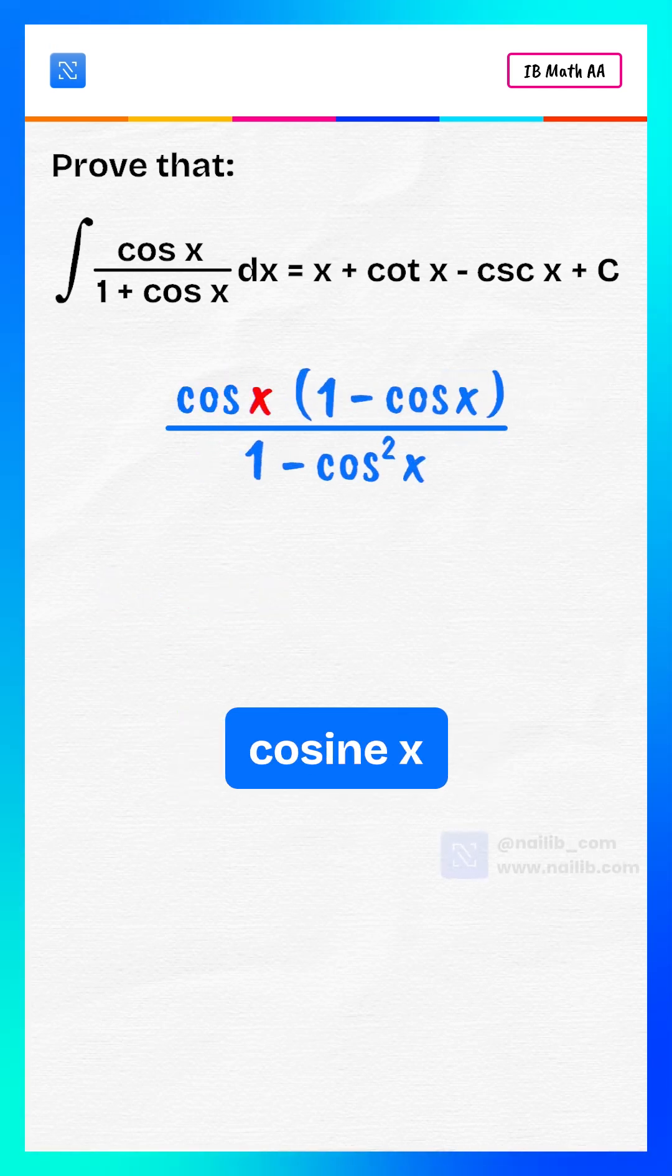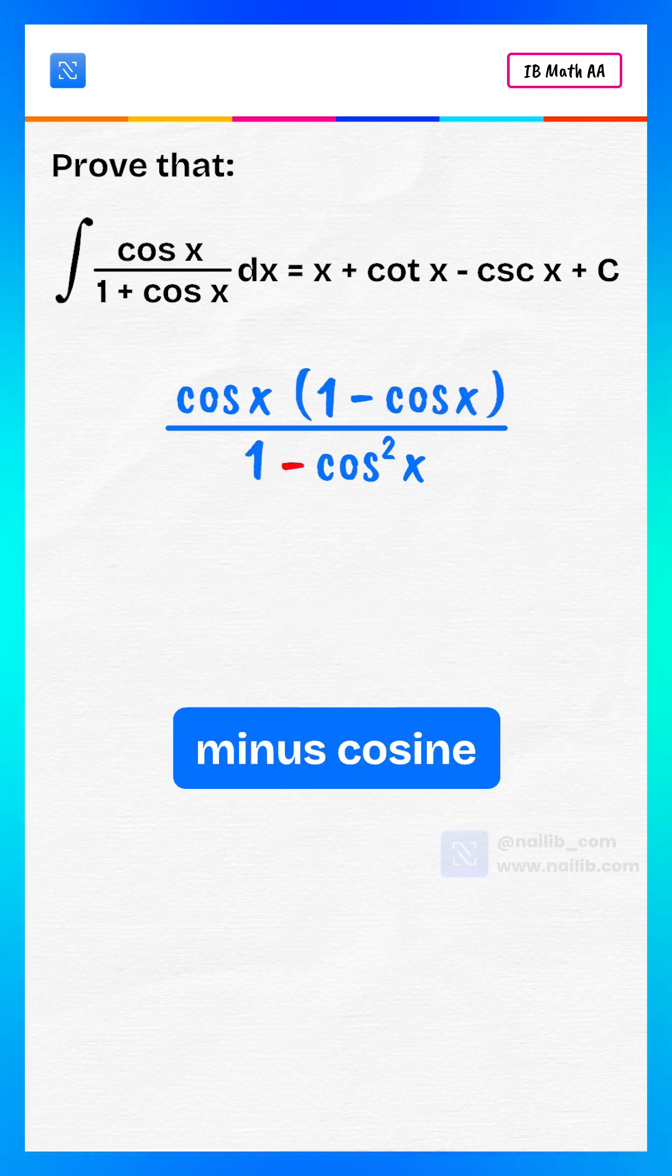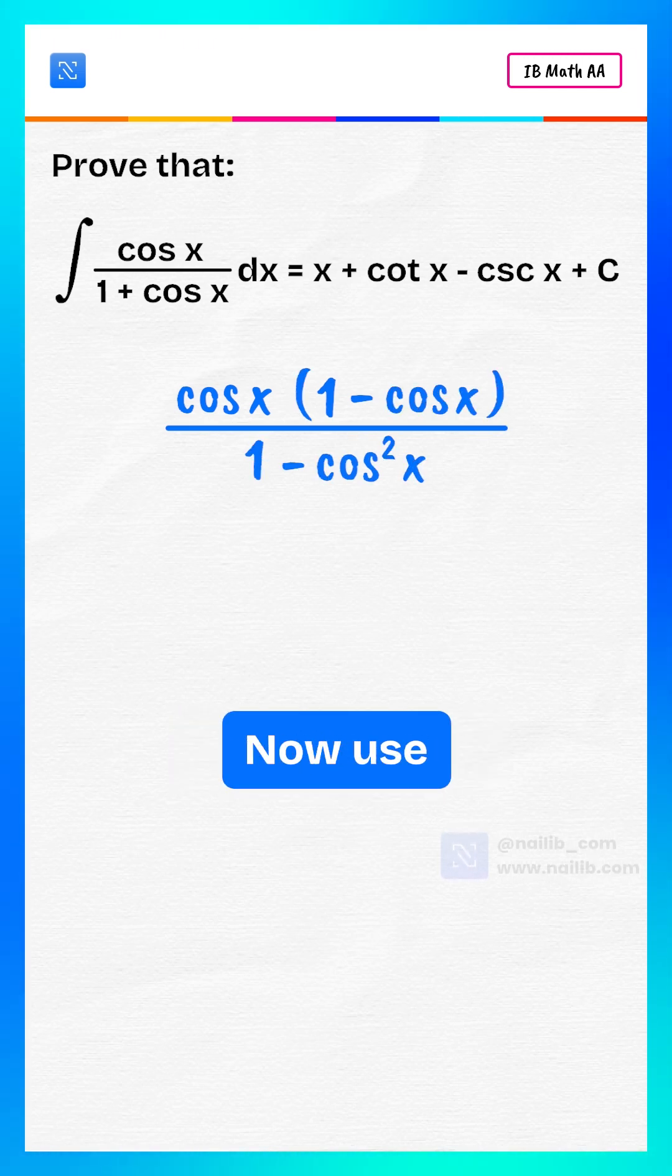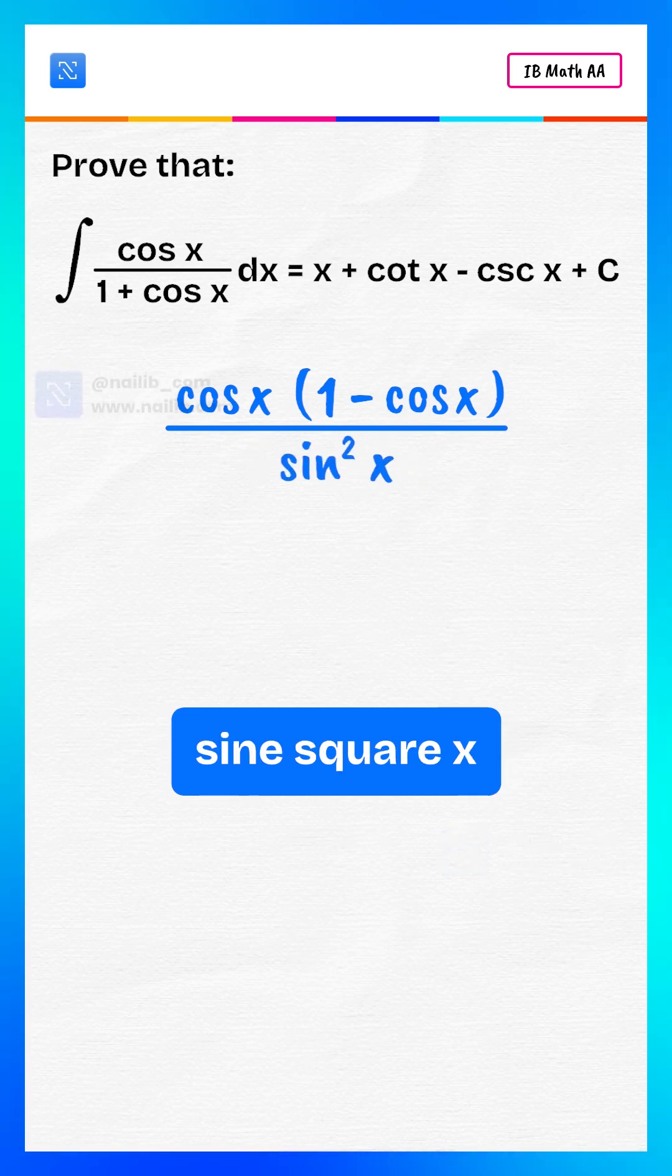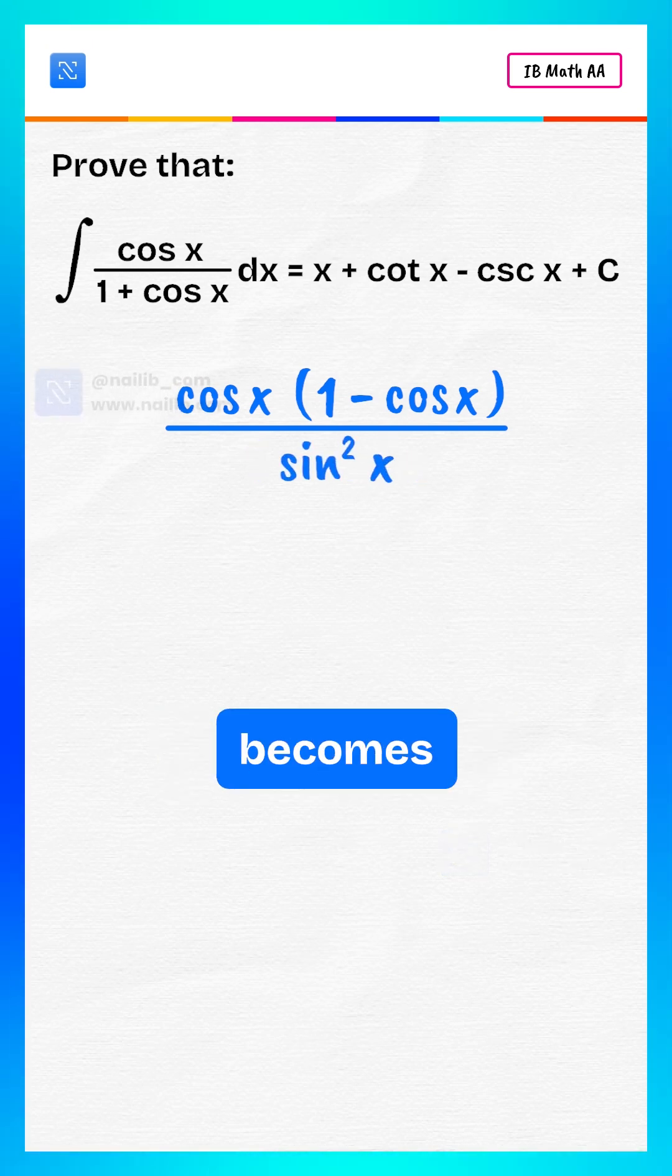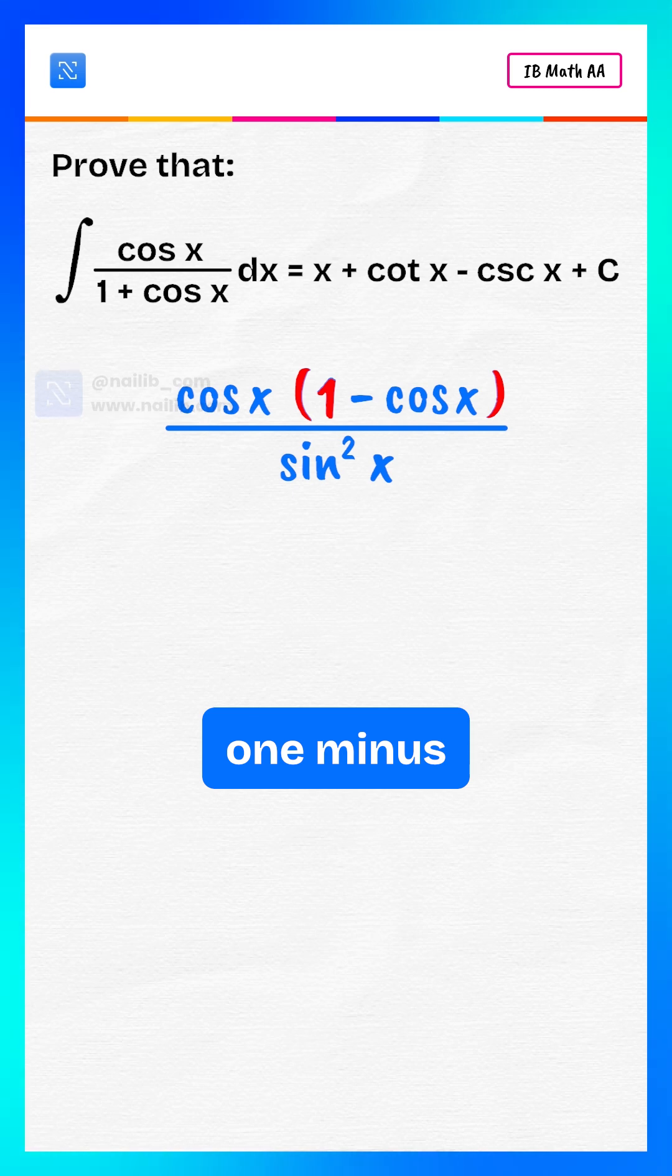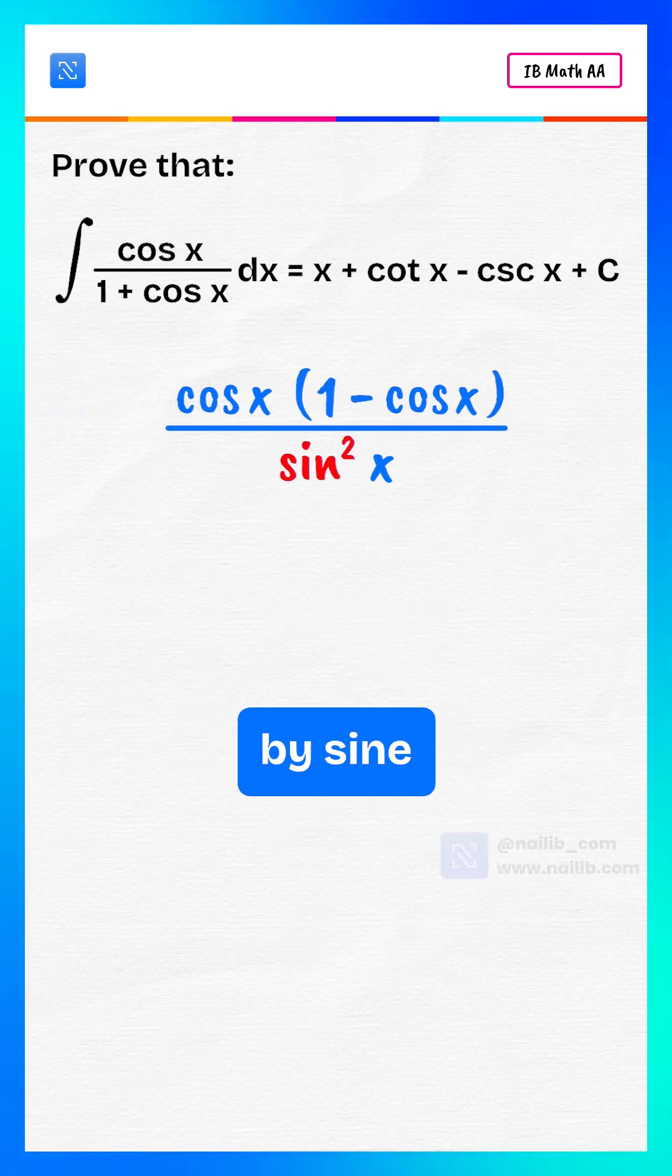That gives us cosine x multiplied by 1 minus cosine x divided by 1 minus cosine square x. Now use the identity: 1 minus cosine square x equals sine square x. So the expression becomes cosine x times 1 minus cosine x divided by sine square x.